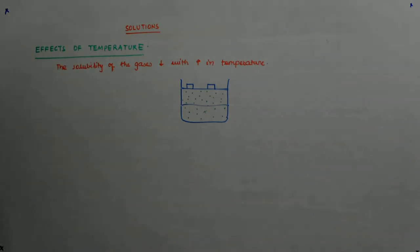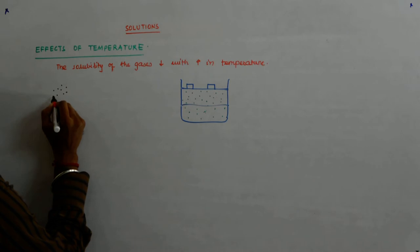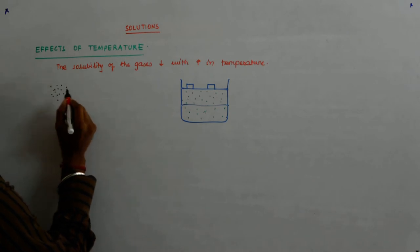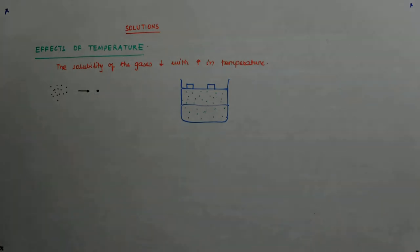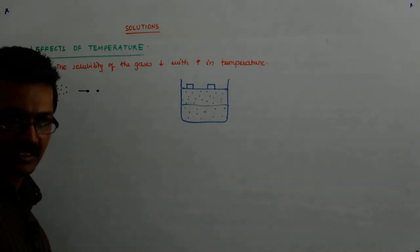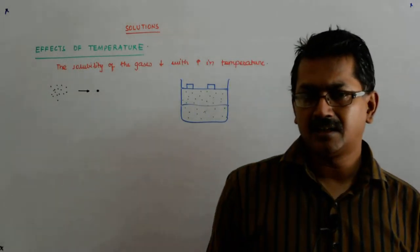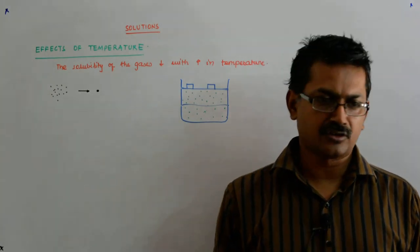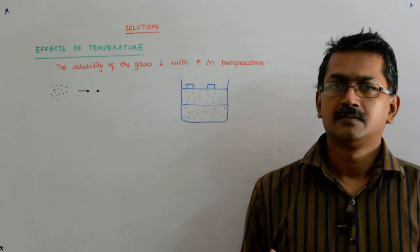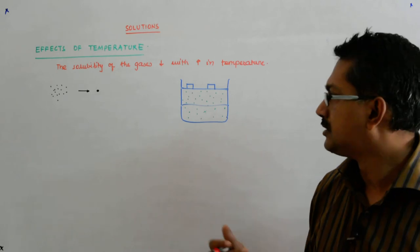Now, this has its origin in the physics. Whenever there is condensation, whenever so many molecules come together to form a big molecule, what happens? Energy is released. Why? Why that happens? Because we will understand this better when we go to study the surface tension in physics. Surface tension is nothing but surface energy per unit area.